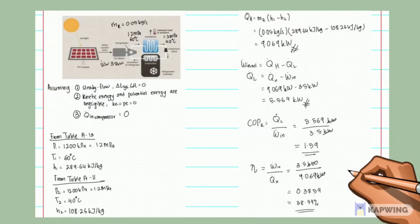Here we have an example for the efficiency calculation, using the same photovoltaic diagram as before. The photovoltaic solar panel converts solar energy to electrical energy, generating DC current.